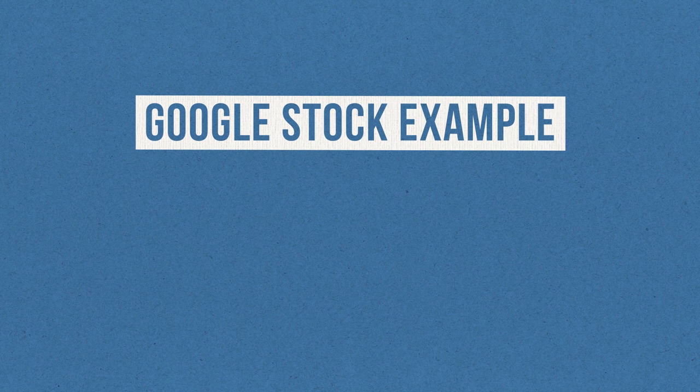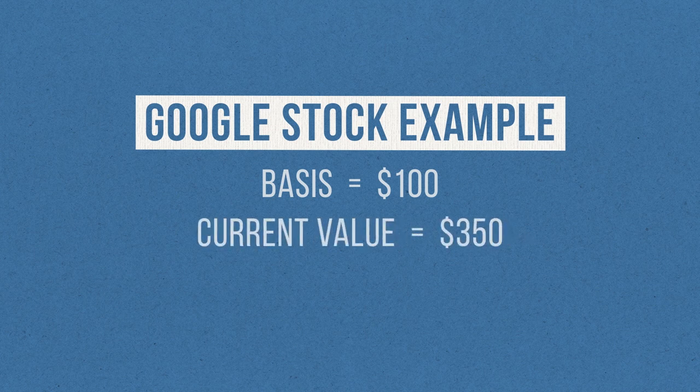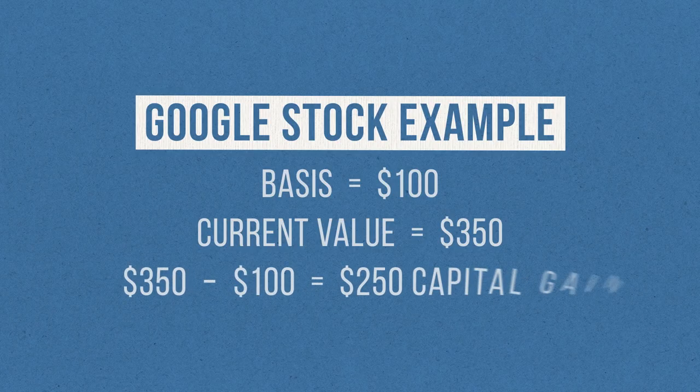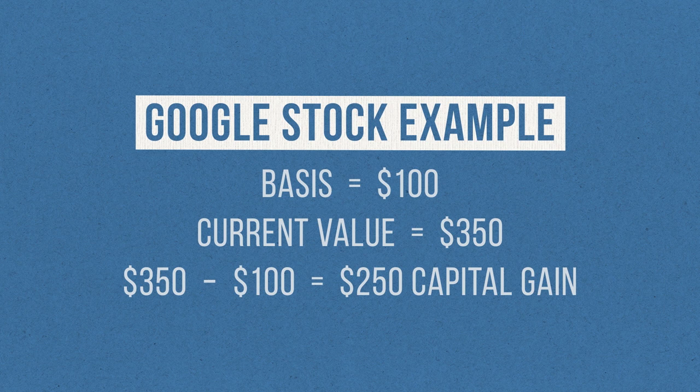If you own an asset that has gone up in value since you bought it, but you haven't sold it yet, that increase in value is called unrealized gains. When you sell that asset and cash out, the gains have now been realized. As an example, let's say I bought some stock in Google for $100. This is my basis. Five years later, I notice that I have some unrealized gains — my Google stock is now worth $350. I decide now's the time to sell and realize those gains. Someone pays me $350 for that Google stock. To calculate my capital gains, I take the amount I sold the stock for, $350, and subtract my basis, $100. The result is a capital gain of $250.